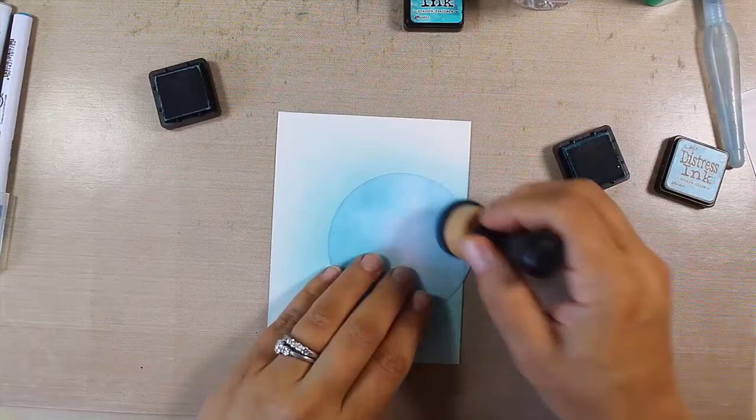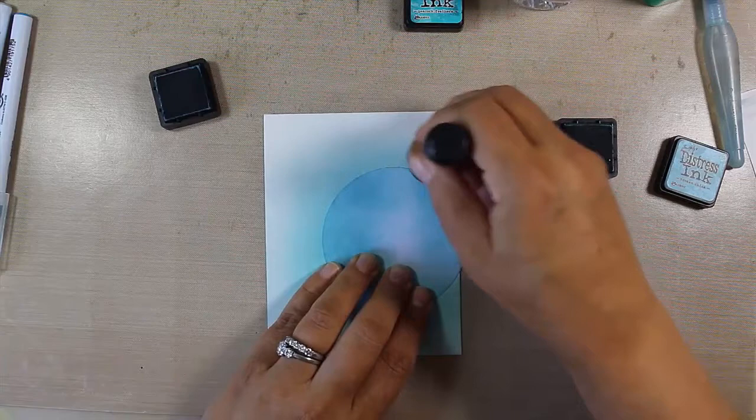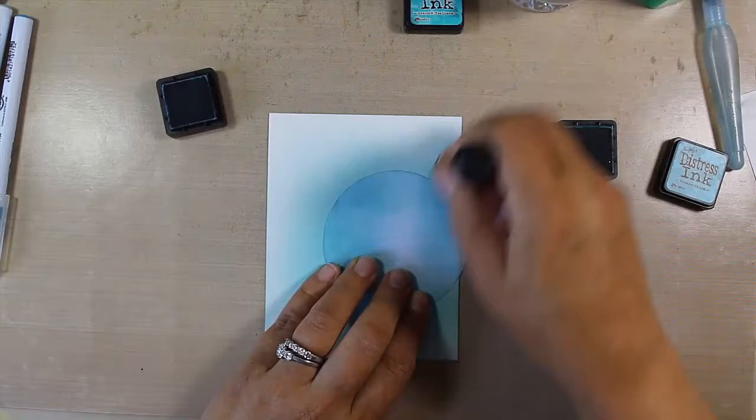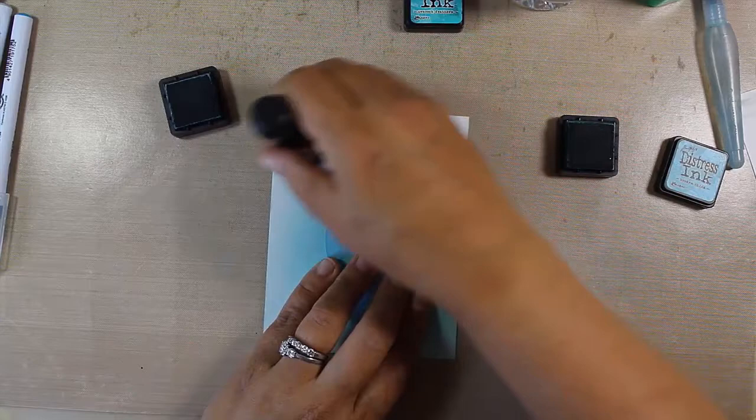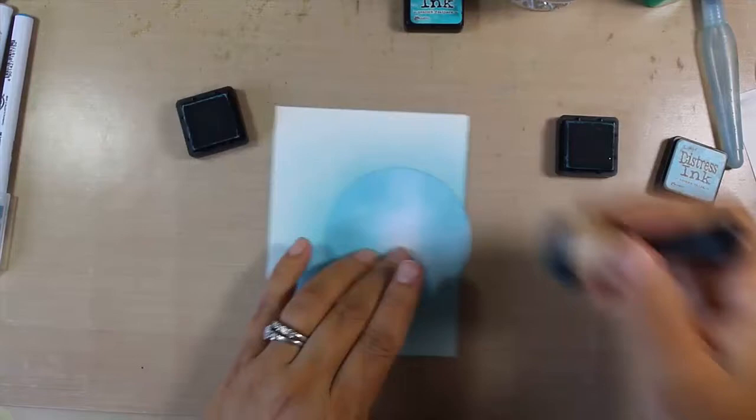As I'm going a little bit further outward, especially up top where I'm trying to keep it light, I'm just going with a really light hand. This is with my lighter shade, the Broken China versus the Peacock Feathers, because the Peacock Feathers is a little bit more turquoise.